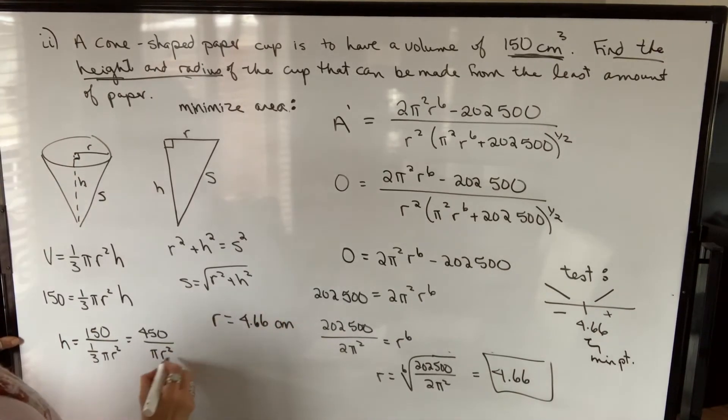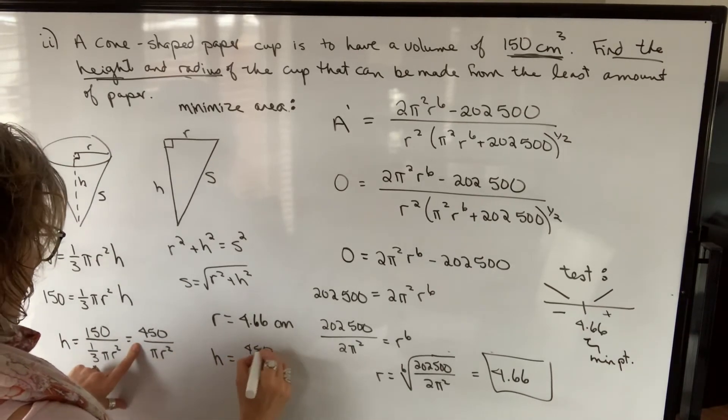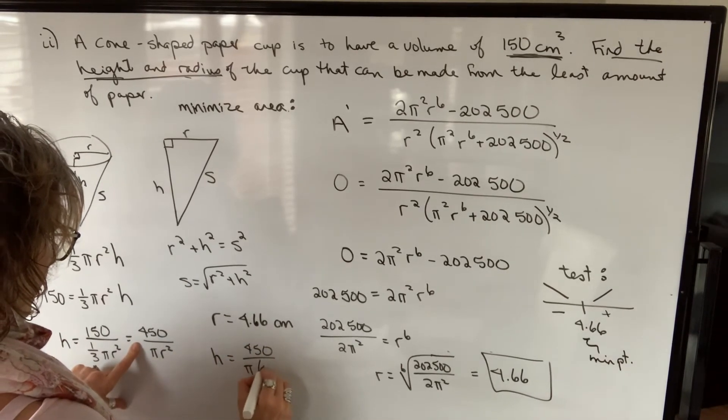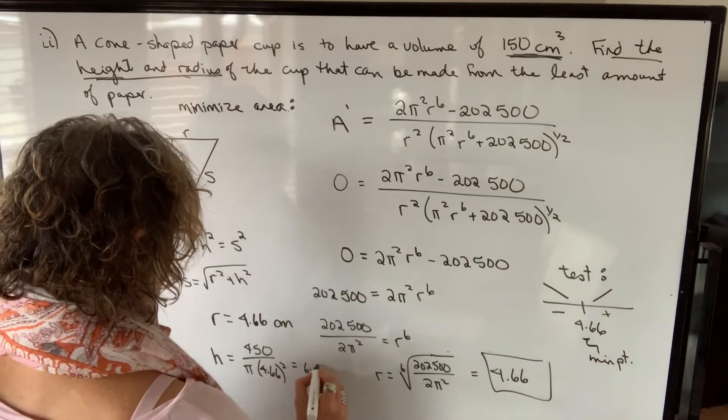The height will be 6.59. If we take 450 and divide by pi times 4.66 squared, we get 6.59.